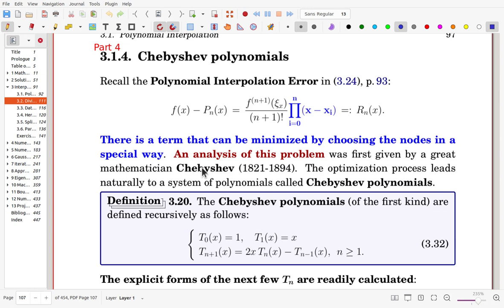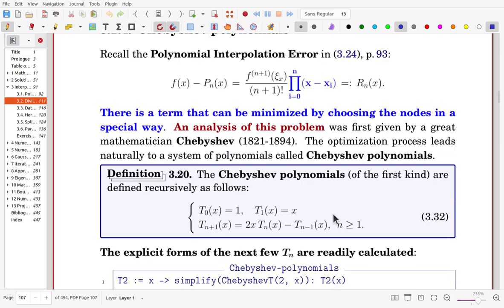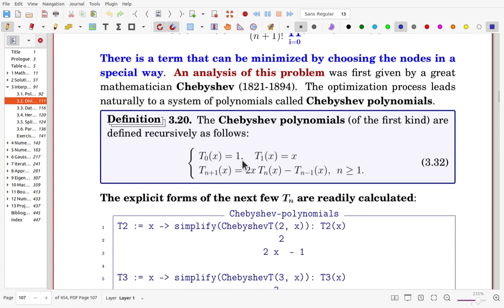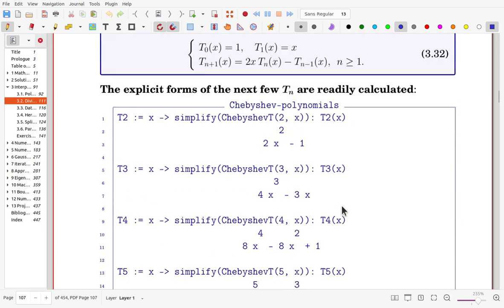Here we define Chebyshev Polynomials. T0 of x is 1, and T1 of x is x, and recursively we define the Chebyshev Polynomials. So for Tn, we have Tn+1(x) = 2x·Tn(x) - Tn-1(x).